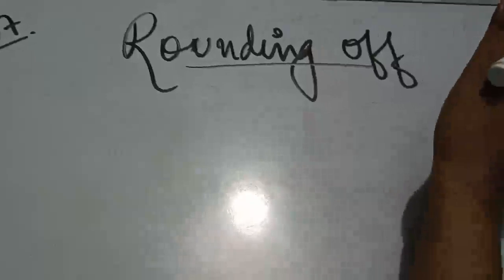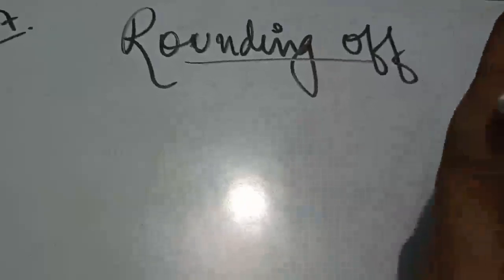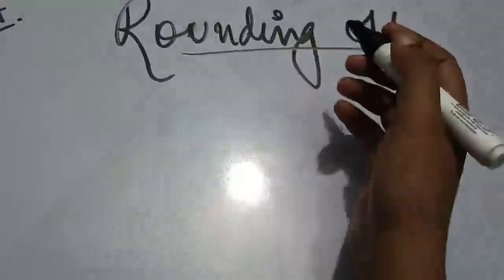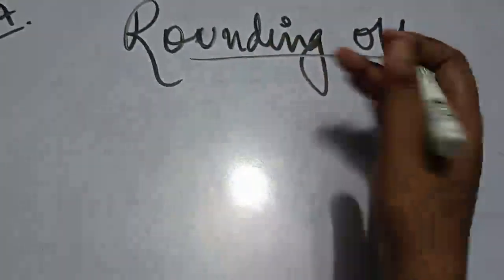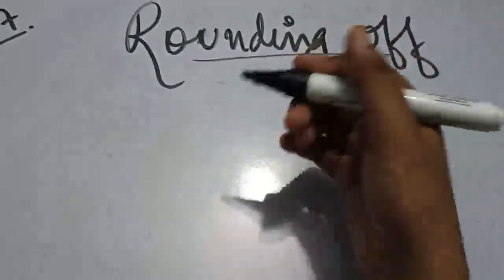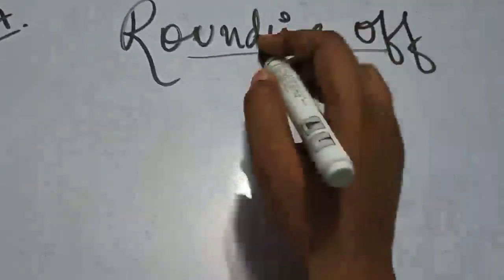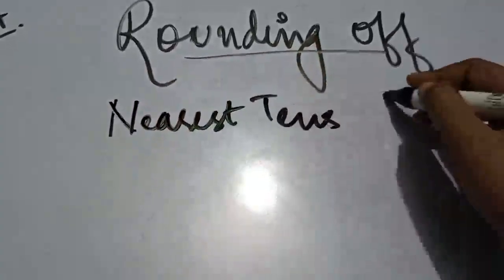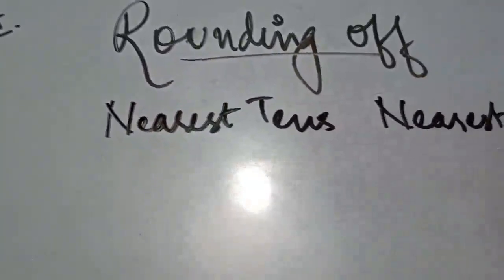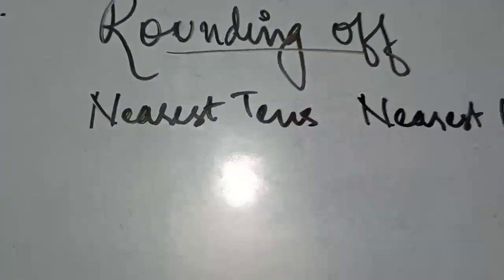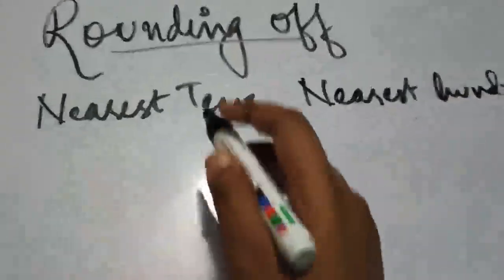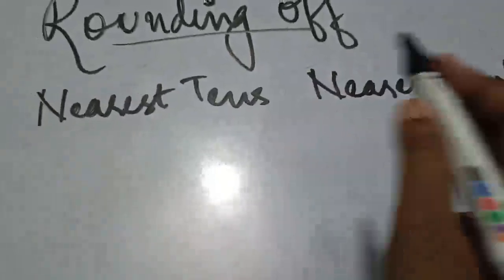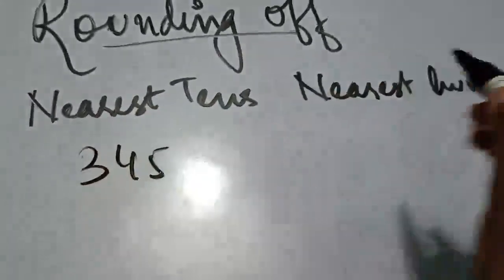Rounding off is something every person has a problem with. I have a very simple method to explain it. If you have to round off to the nearest tens, or nearest hundreds, or any other place value — I am going to explain two key things with an example.